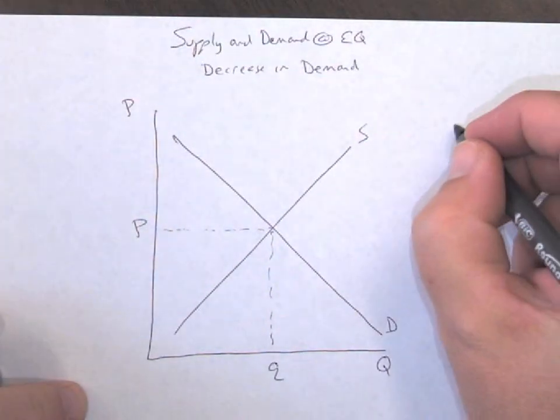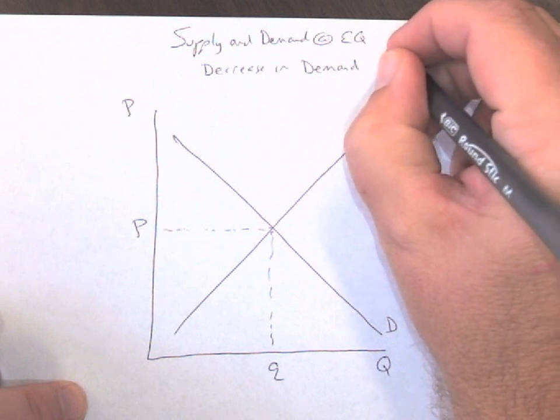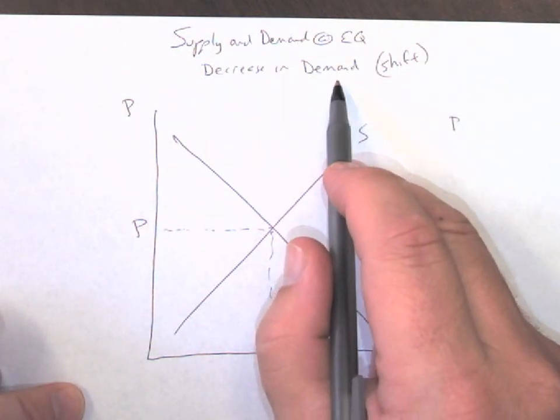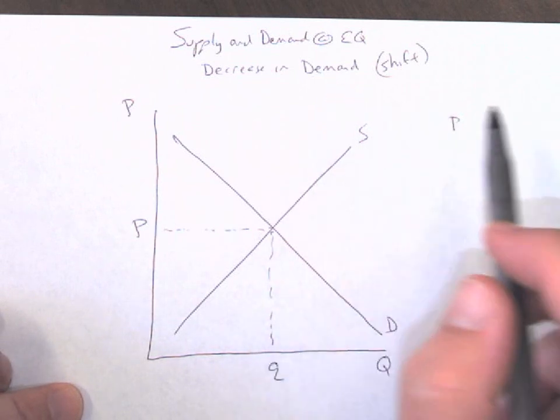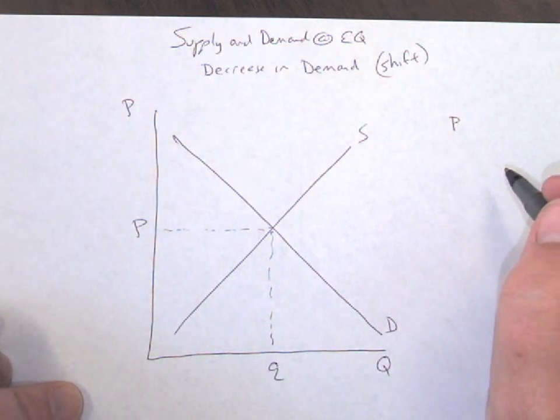Okay, so anytime we have a decrease in demand, we're talking about a shift. Because a decrease in demand is different than a decrease in quantity demanded. Quantity demanded would be a single item. Remember we're on the second stage. We're looking at overall demand for an item.